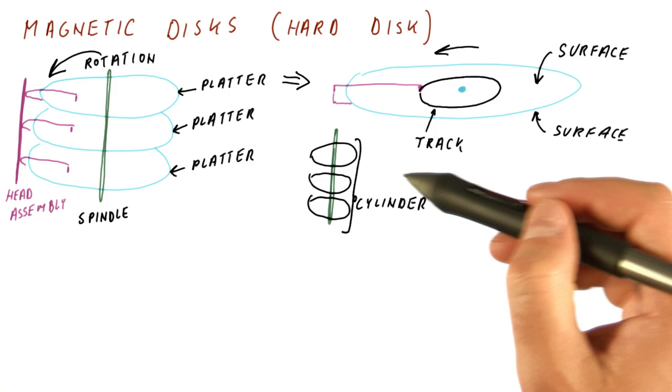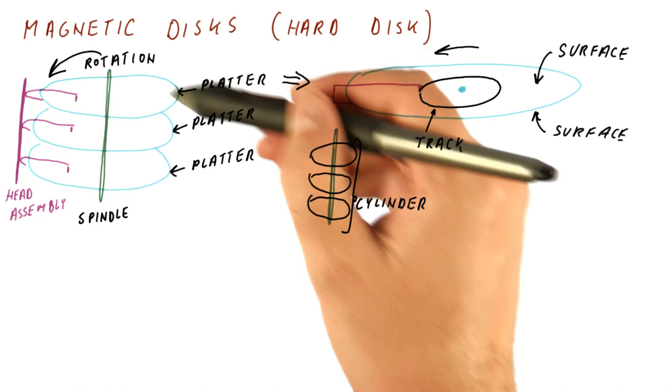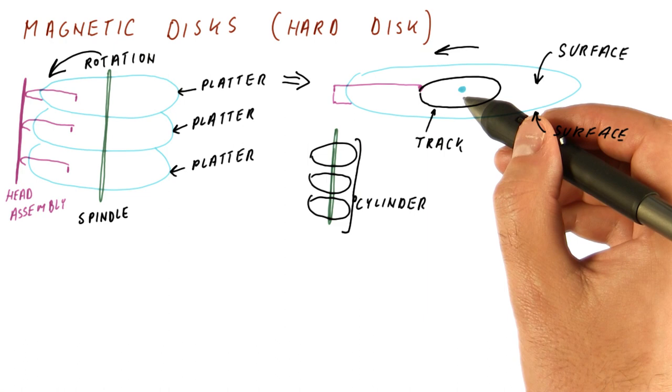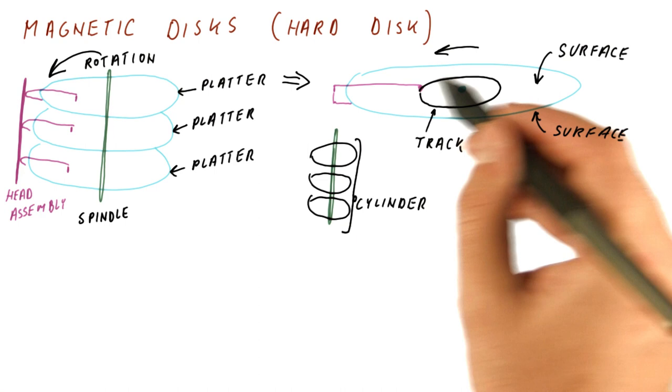So for example here, there are six heads. When they stay in this position and all the plates rotate, they are able to access the six tracks of that cylinder. The way we access different tracks on the disk is by moving the head so that it comes closer or gets further from the spindle, and that way we can access the entire area of each surface.